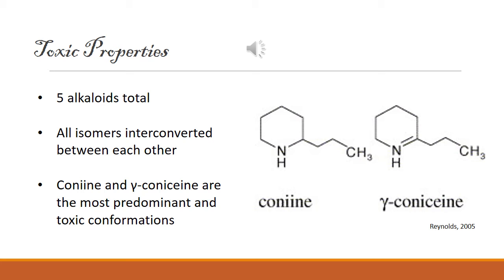Poison hemlock consists of five different alkaloids that are all interconverted between one another based on environmental conditions. These conditions include, but are not limited to, quantity and quality of light, exposure to water stress, and temperature change. The two most toxic molecules are conine and gamma-conicine. The toxicity at any time within a certain tissue of this plant is dependent upon the ratio of these two molecules at that particular time.